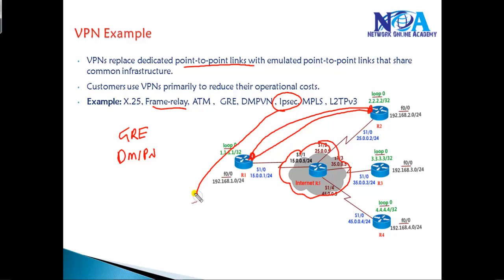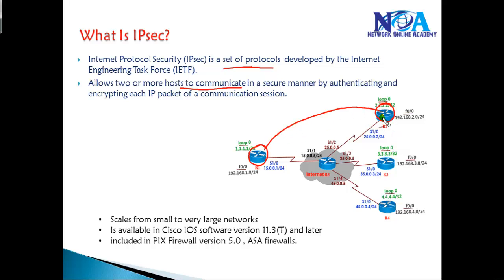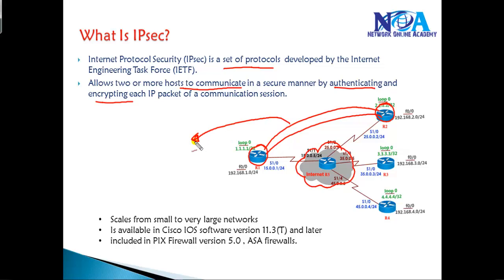IPSec is going to be something different. The main reason for implementing IPSec is to provide more security for your information when it goes over a public network such as the internet. IPSec is a set of protocols developed by the Internet Engineering Task Force (IETF) which allows communication between two different hosts — for example Router 1 and Router 2 — over an existing network in a more secure manner, by doing authentication and encryption, creating a secure channel between two devices over any public network.